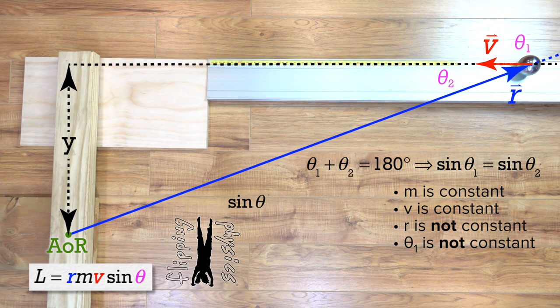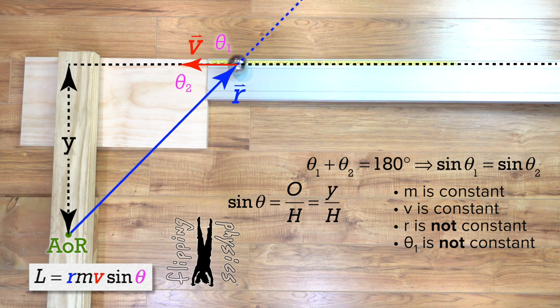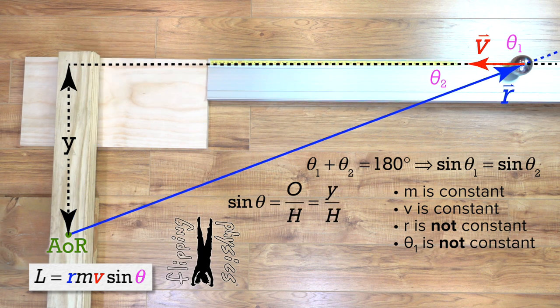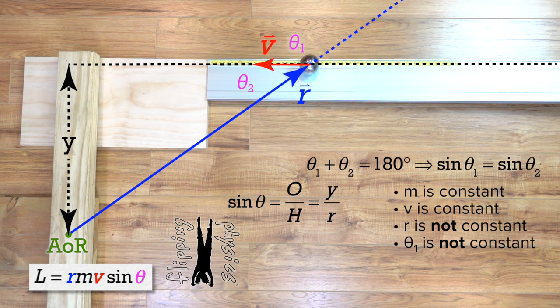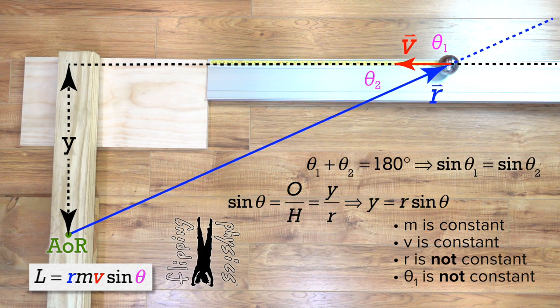Sine of theta equals opposite over hypotenuse. Opposite theta 2 is side Y. And the hypotenuse is the r vector. Oh, we can solve for y which equals r times sine theta.